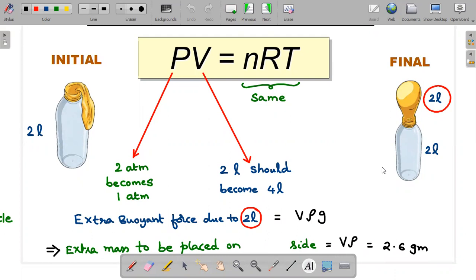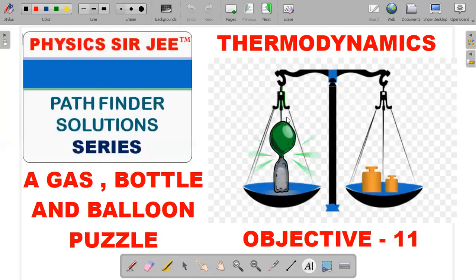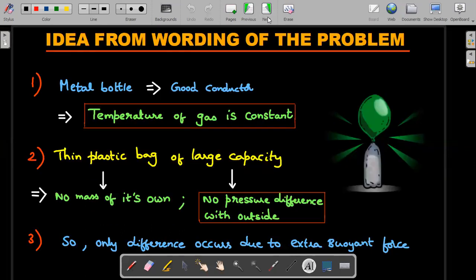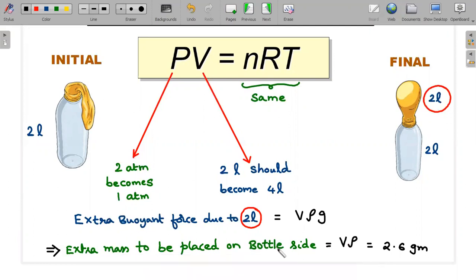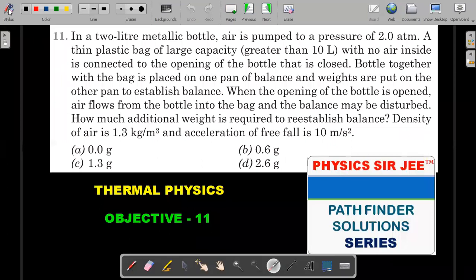He never mentioned that, but I think you might have understood the reasoning for that. So extra mass should be placed on the bottle side and not on the weights. I hope that's very clear and my answer should be 2.6 grams. So we'll go and search for that option and mark it like this. I hope you understood the concept behind this particular problem.